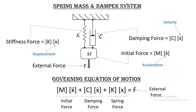For a thorough understanding of static and dynamic analysis, we need to understand the governing equation of motion. For that, we have a spring, mass, and damper system. The mass m is suspended by a spring of stiffness K and a damper of damping coefficient C. The external force F is applied on the mass, which will displace the mass m in the downward direction. The internal resistance force to vibrate mass m with acceleration X double dot is known as the inertial force, which is the product of the mass matrix and the acceleration matrix. The internal resistance force due to the stiffness of the spring is equal to the product of the stiffness matrix and the displacement matrix.